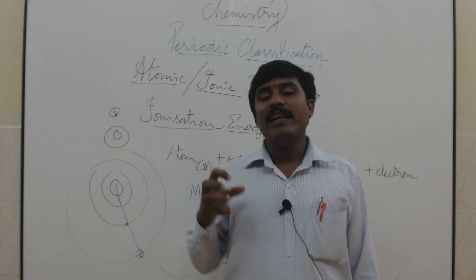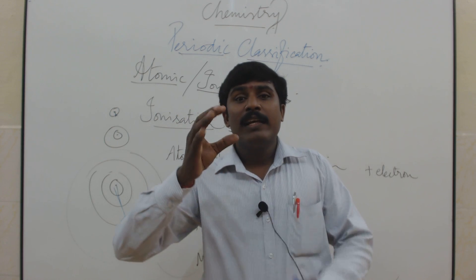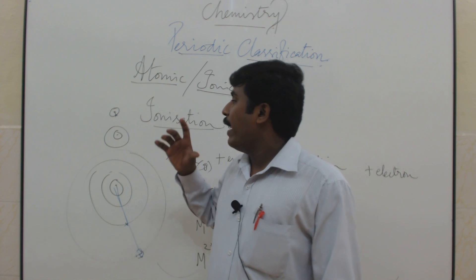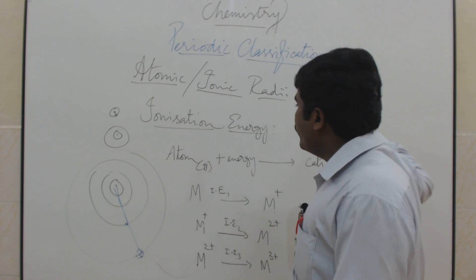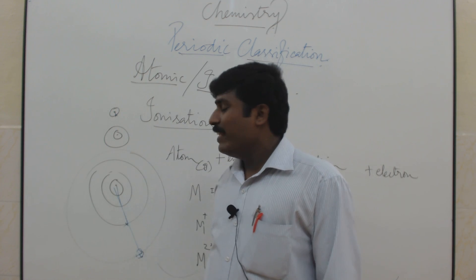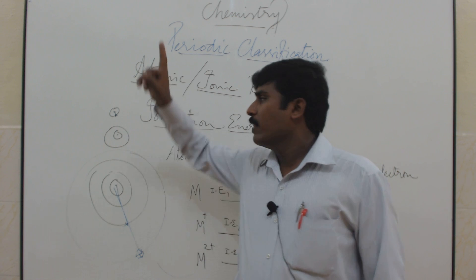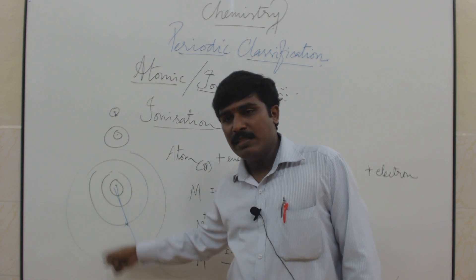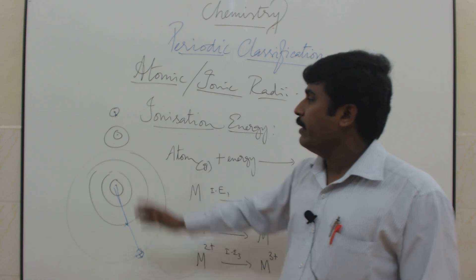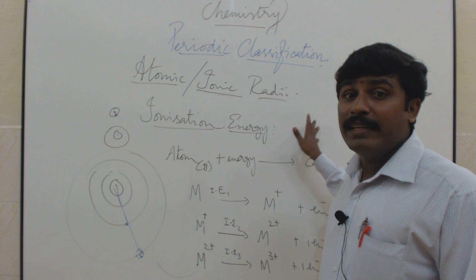In a period, atomic size decreases, meaning electrons are closer to the nucleus and can't be removed as easily — you have to apply a large amount of energy. So ionization energy in a period increases, and ionization energy in a group decreases. To summarize: atomic size in a group increases, in a period decreases; ionization energy in a group decreases, in a period increases.